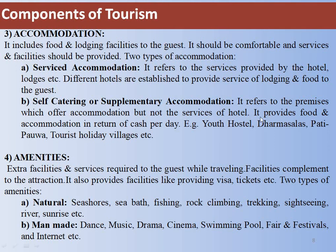Self-catering accommodation can include Dharmashalas, tourist holiday villages, or hostels where accommodation is provided on a cash-per-day basis. The fourth component is Amenities — extra facilities and services provided to guests while travelling that complement the attraction, such as visas and tickets. There are two types: natural amenities like the seashore, sea bathing, fishing, and water camping; and man-made amenities like dance, music, drama, and swimming pools.